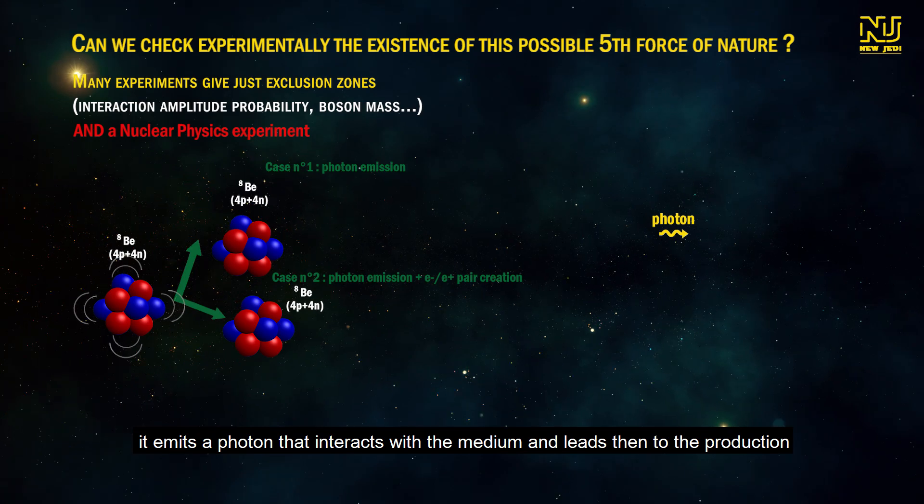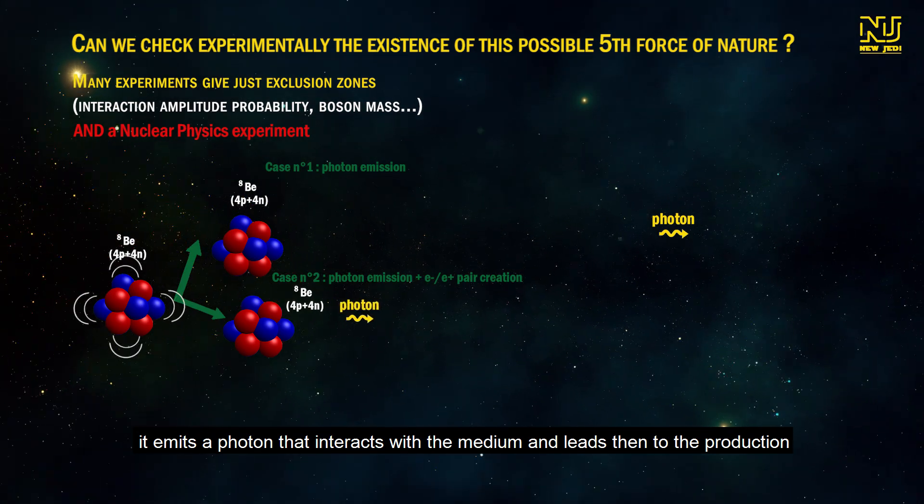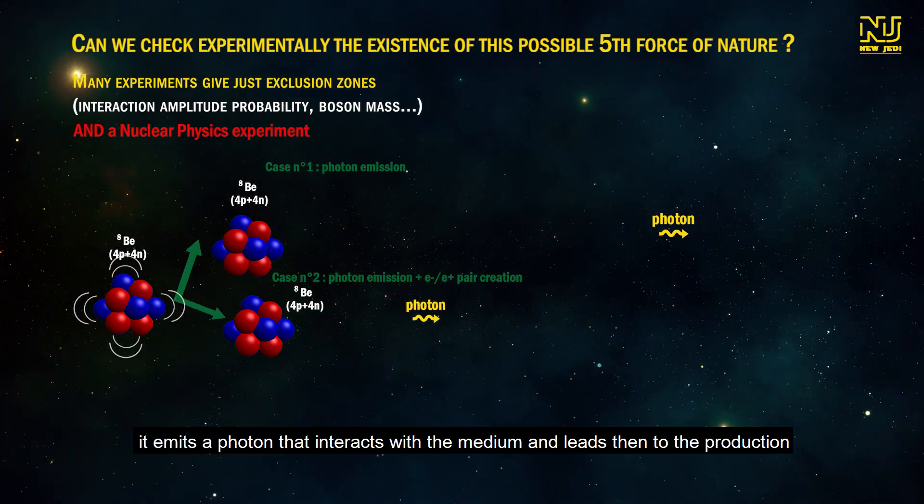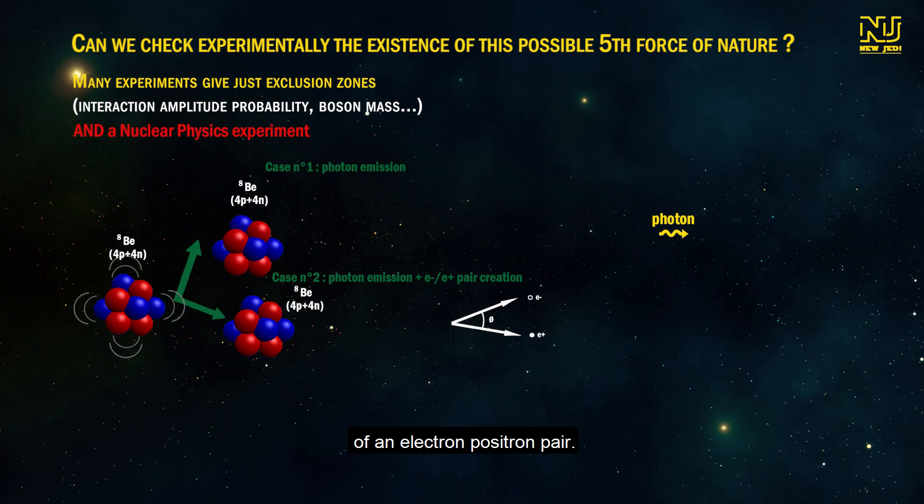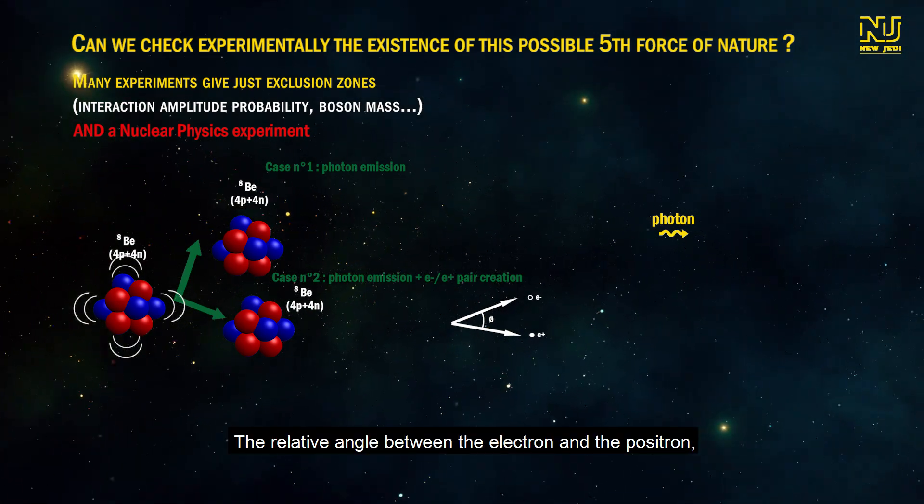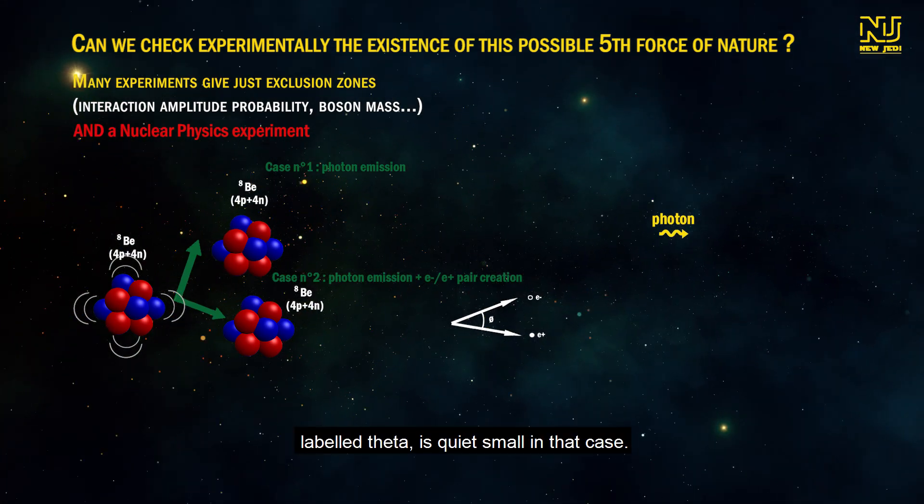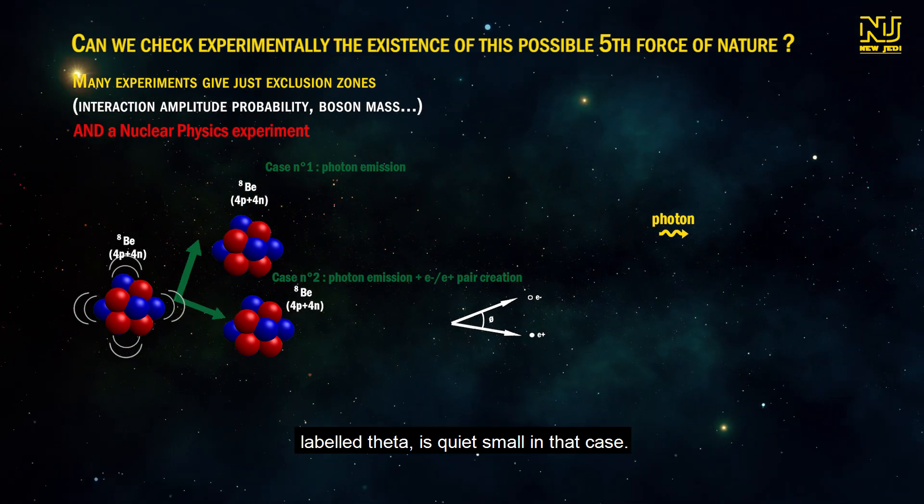It can emit a photon that escapes the reaction area at the speed of light. Or case number two: It emits a photon that interacts with the medium and leads then to the production of an electron-positron pair. The relative angle between the electron and the positron labeled theta is quite small in that case.